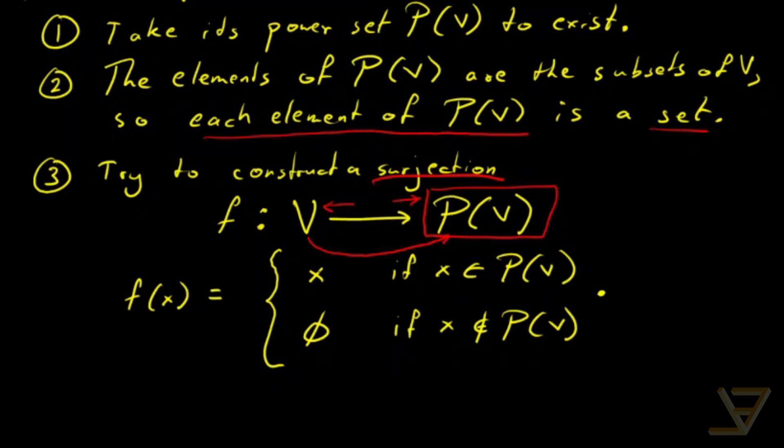And everything gets hit in the power set of V because we're using the identity function in this case. And if there is anything else inside V, we just arbitrarily map to the empty set. We can map to something else as well, but this is the easiest one.